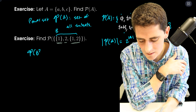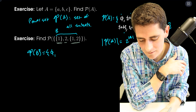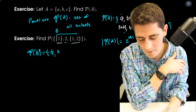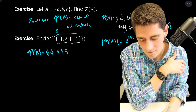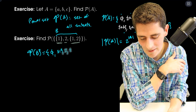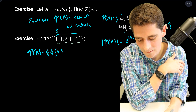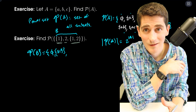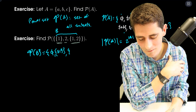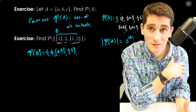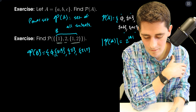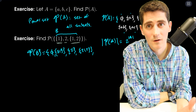The power set of B is going to be — don't forget, we always have the empty set. Then I think about my sets of cardinality one. I have to list these as sets, not elements themselves. So I have the subset containing {1}, the subset containing just 2, and the subset containing the set {1,2}. Those are my subsets of cardinality one.